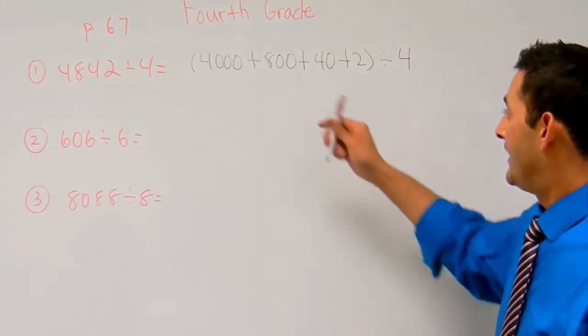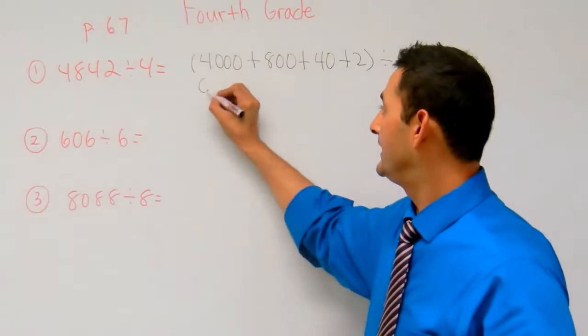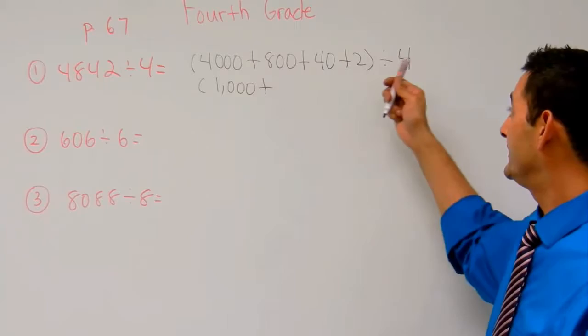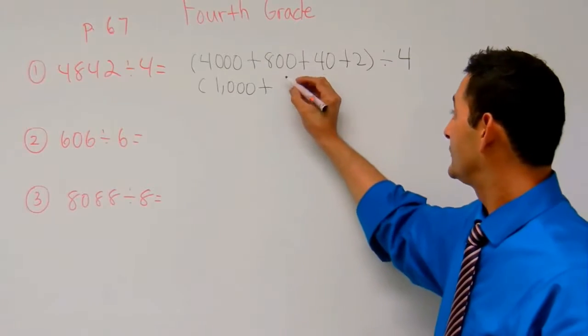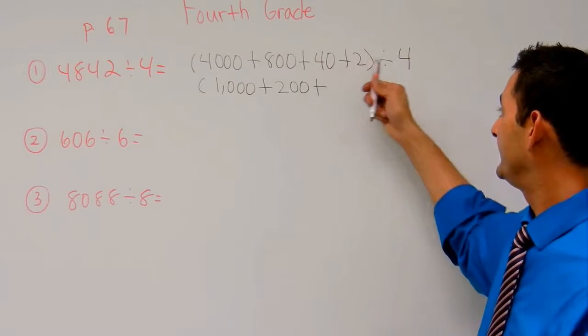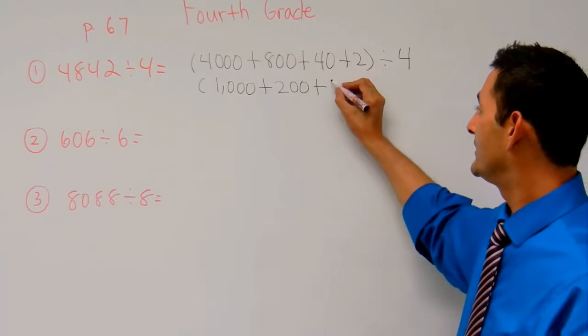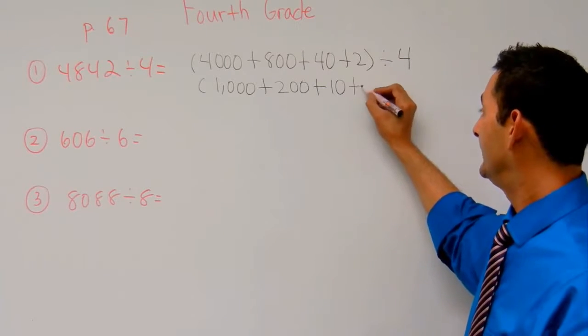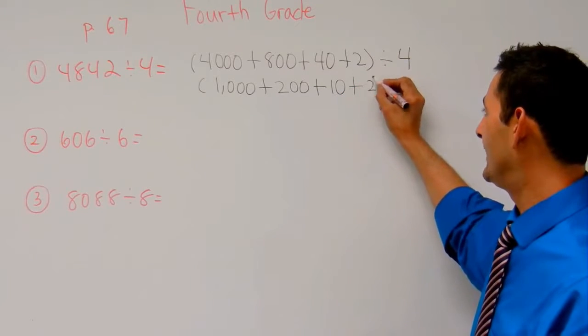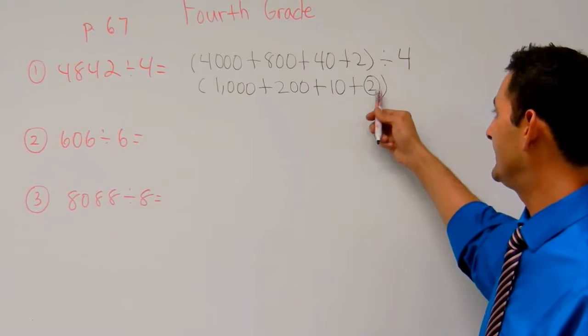So 4,000 divided by 4, that's going to be 1,000 plus 800 divided by 4, that's going to be 200 plus 40 divided by 4 is going to be 10. I'm going to leave that 2 there and circle it because it didn't go into that 4.